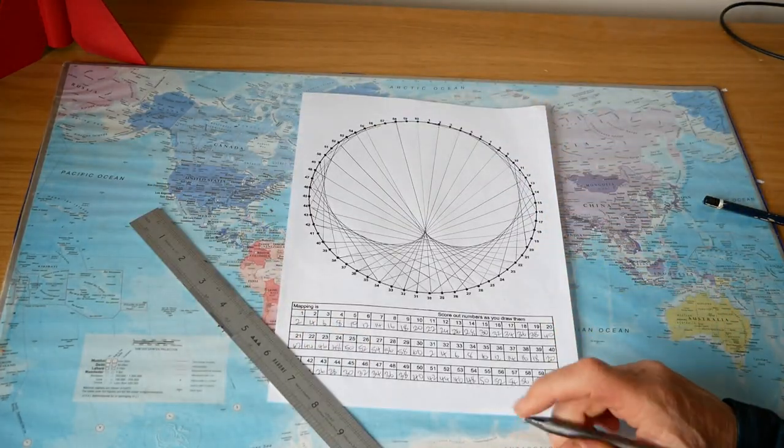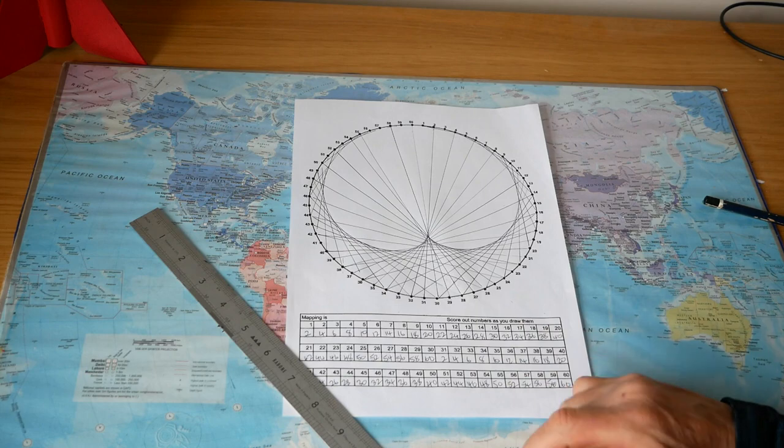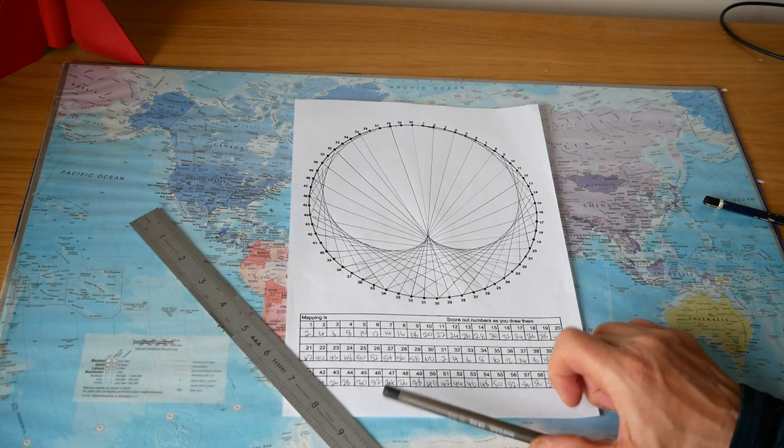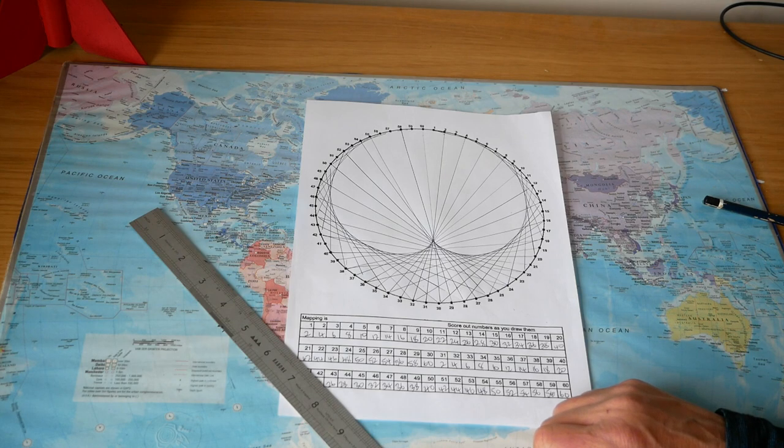Right, that's it done. One deliberate mistake - wonder if you saw it. Prizes if you do. But yeah, there you go, there's a cardioid. Take your time, don't make a mistake if you can, but yeah, enjoy.